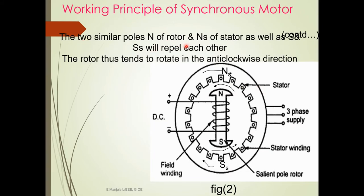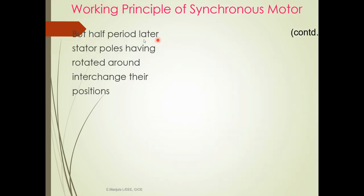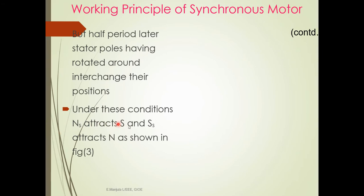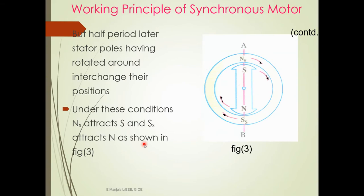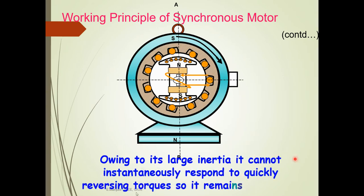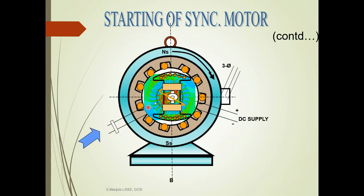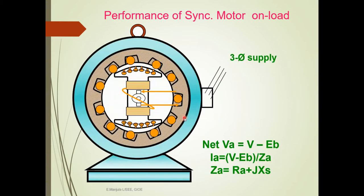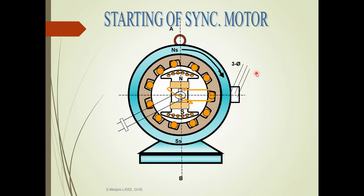The two similar poles — N of the rotor and NS of the stator — repel each other and the rotor tends to rotate in the anti-clockwise direction. But half a period later, stator poles have rotated around, interchanging their positions. Under these conditions, NS attracts S and SS attracts N. Due to its large inertia, the rotor cannot instantly respond to the reversing torque, so it remains stationary. Therefore, the synchronous motor is said to be not a self-starting motor.